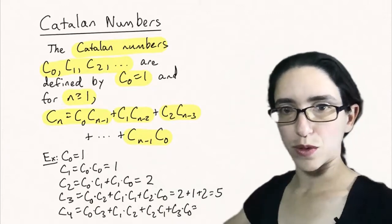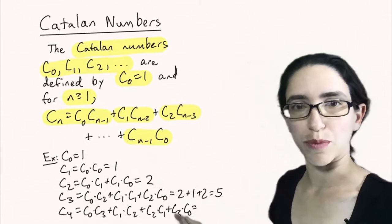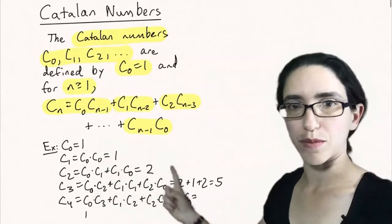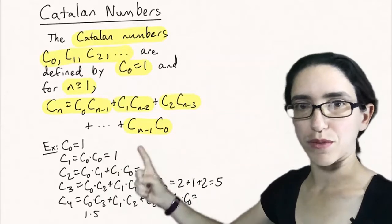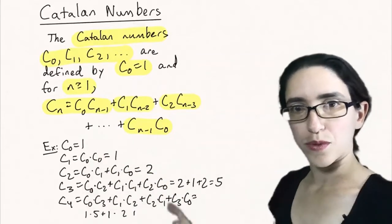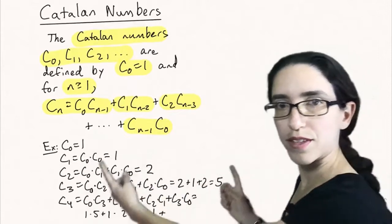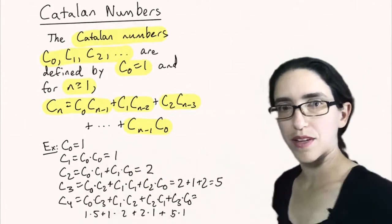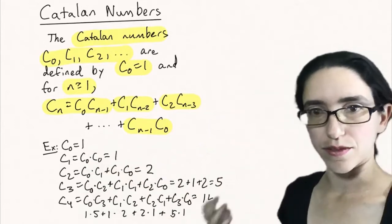And now if we do the formula for 4 as one final example, C0 times C3 plus C1 times C2 plus C2 times C1 plus C3 times C0. So we get 1 times 5 plus 2 times 1 plus 2 times 1 plus 1 times 5, and altogether that's 14.